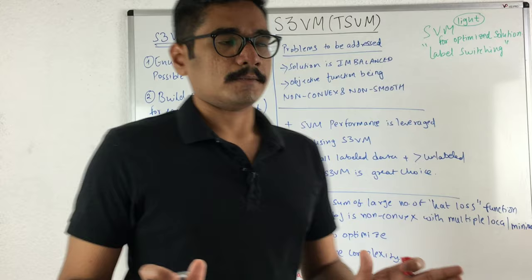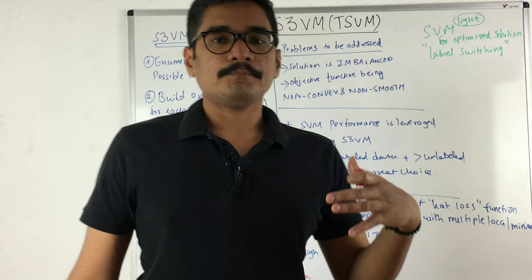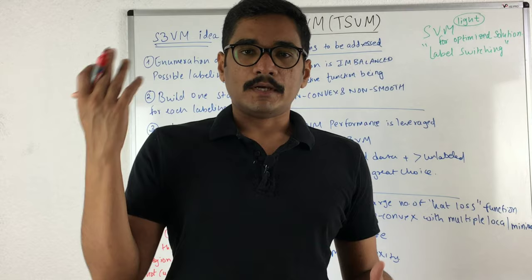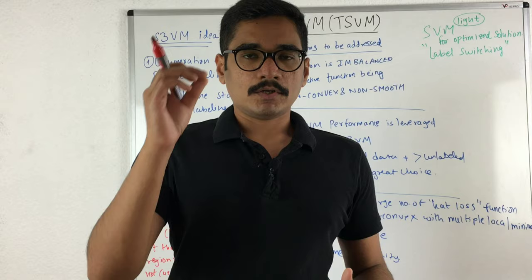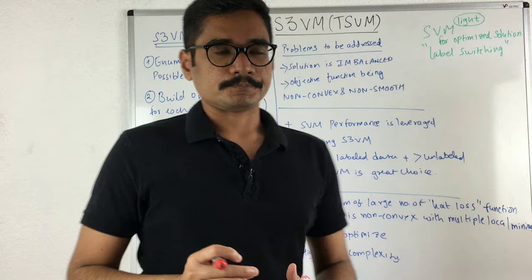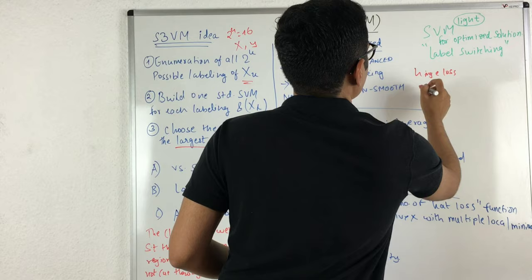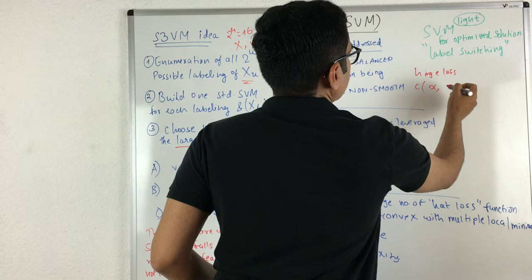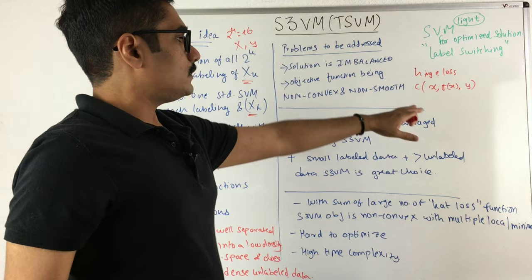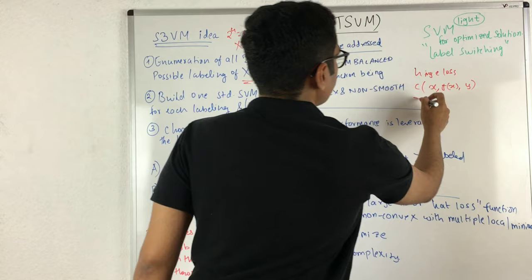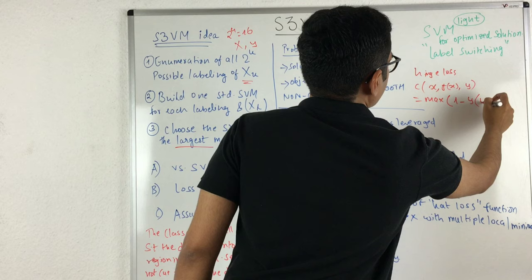Talking about loss functions — if you have watched the SVM video (link in description), the particular loss function SVM uses is called the hinge loss. If we denote a function c, it is given by x, f(x), and y. On these three elements we define our hinge loss function, which is given as: max(1 − y · (w^T x + b), 0).